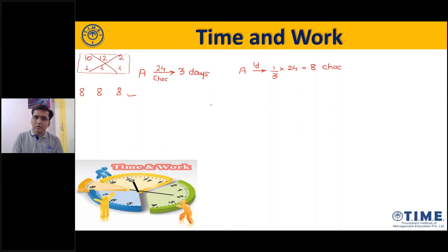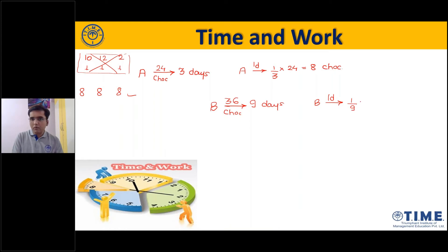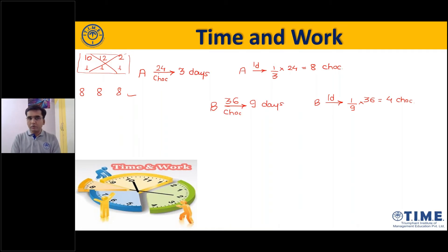For example, if I say someone finishes 36 chocolates in 9 days — can you tell me, in one day how many chocolates will be eaten? Yes, 1/9th of the total work, and the total work is 36, so it will be 4 chocolates. Now, the total work was 24 chocolates here and 36 chocolates there. We will now discuss some methods where the total work is represented differently.